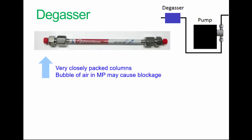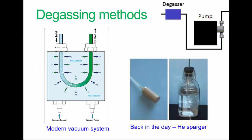So the degasser, going back to the schematic diagram. If the mobile phase contains any dissolved gases, they may form a bubble, which under the high pressures involved may block the column. A degasser is a vacuum system that removes any dissolved gases.